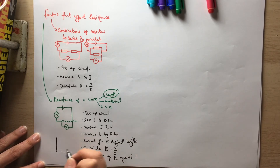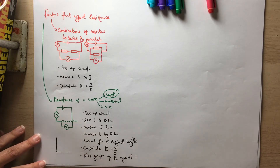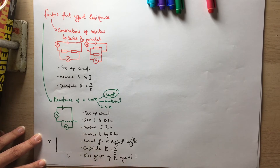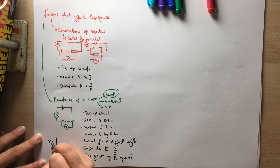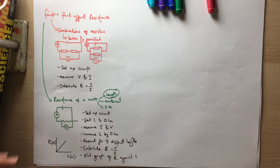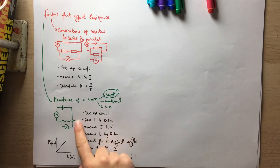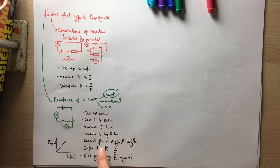For required practicals it's useful to know what the expected pattern is. If we plot L in metres and R in ohms, we would expect to get a graph showing direct proportionality — a straight line through the origin. Knowing the expected method and result is important.